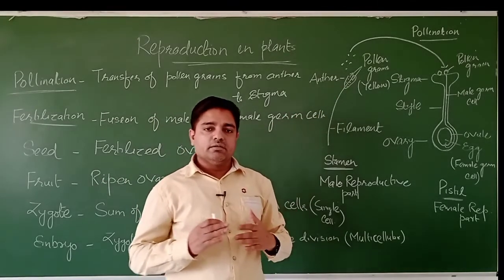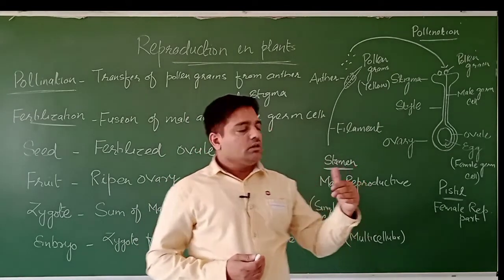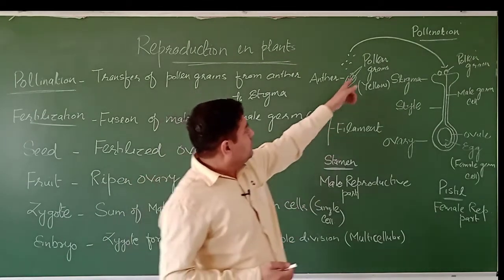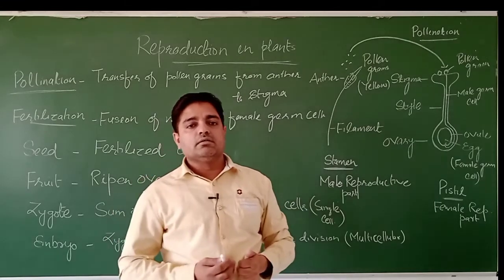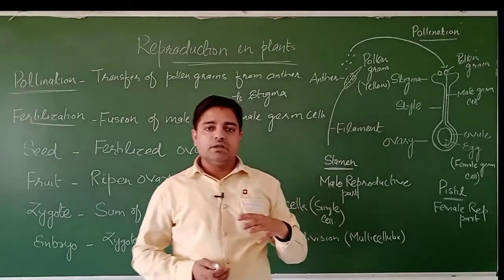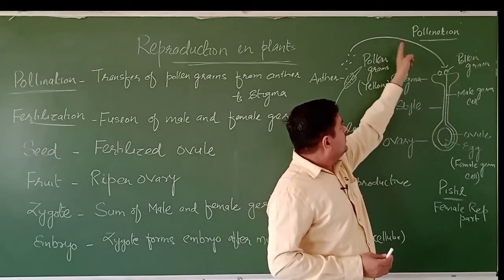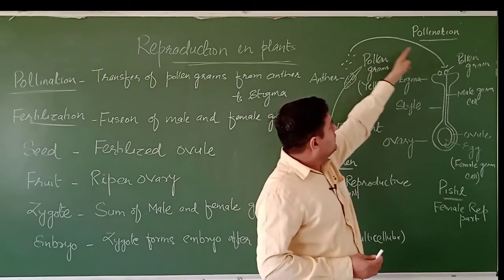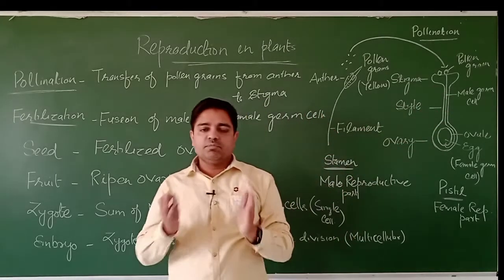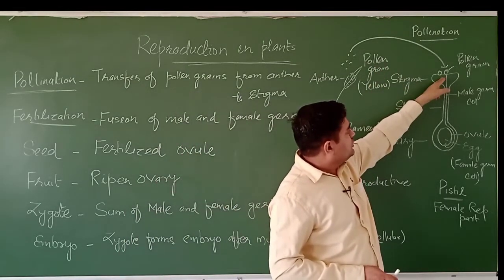The anther is the main component in which pollen grains are present. When this male part reaches maturity, the anther bursts and the pollen grains come out. When these pollen grains come out from the anther, they may float with the air and travel — as this arrow shows — to the stigma.